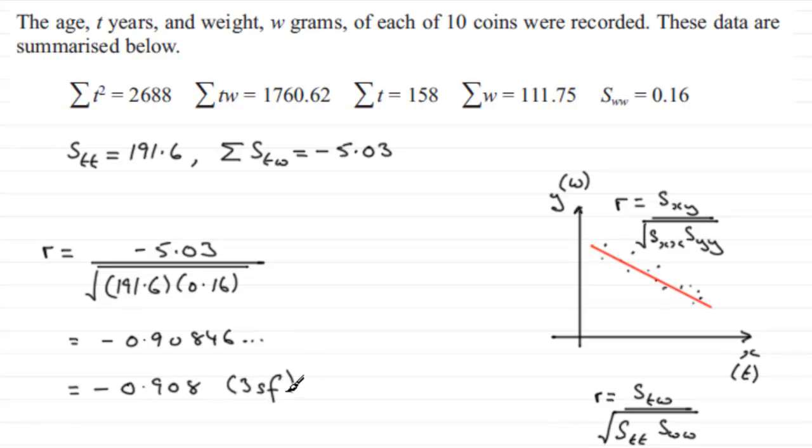And it's a value which is, as we can see, negative, fairly close to minus 1. So we could expect our points to lie very close to a line going downwards. That's what you would most probably expect when you think about it, because the age of a coin, as it increases, you can expect the weight to decrease.